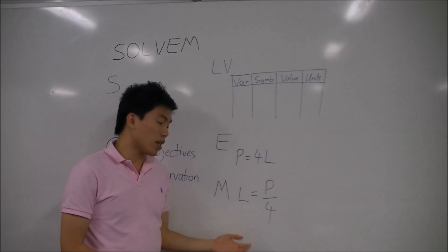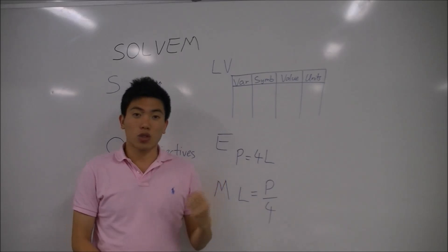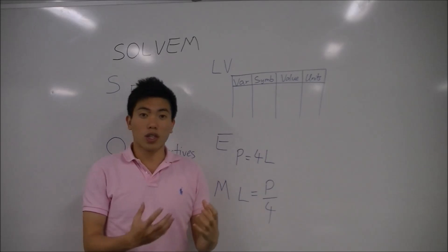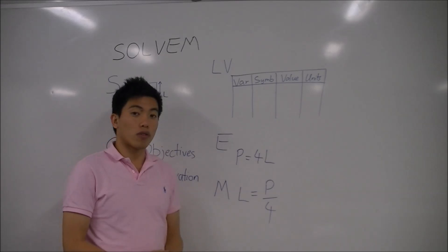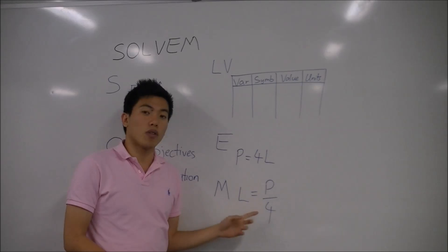And finally, in manipulation, you need to rearrange your equation to identify the thing you're trying to solve for, or the one thing that the question's asking you for. In this case, I want to find the length of one side, so I've rearranged for L, giving me P over four.